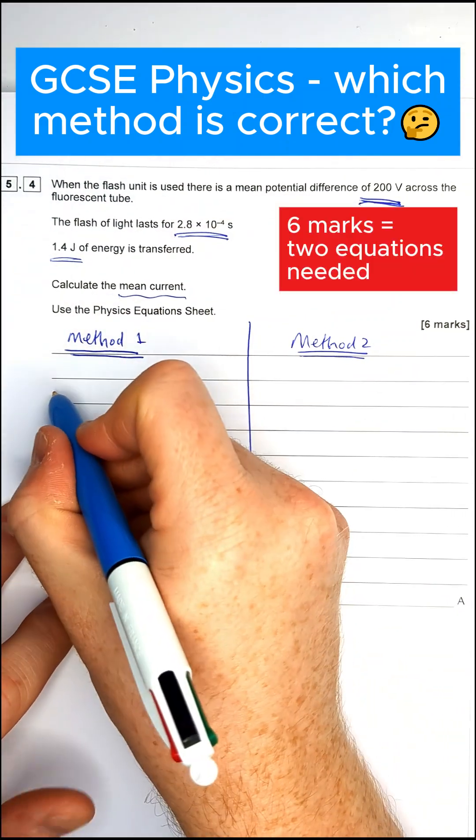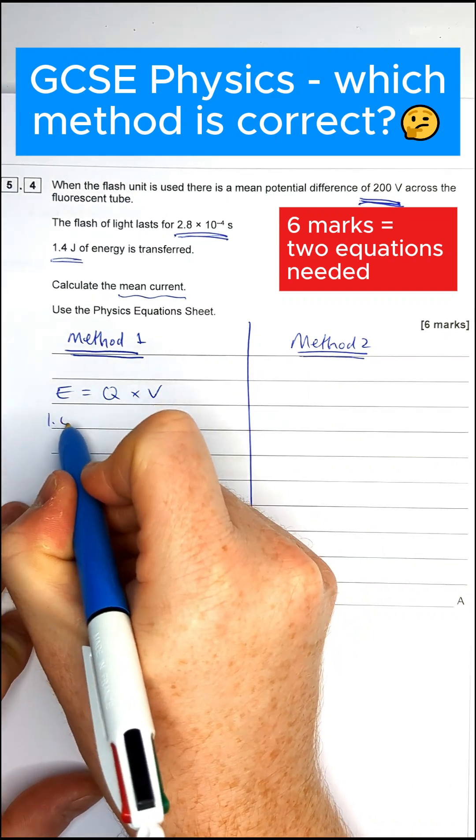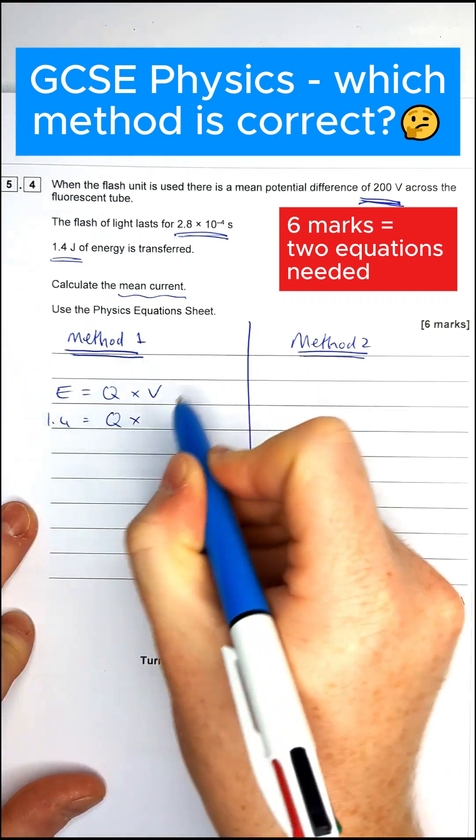So method one is we can find the charge out by using this equation here. We know what the energy is. So we're going to write that in 1.4. We don't know what the charge is. We do know the potential difference.